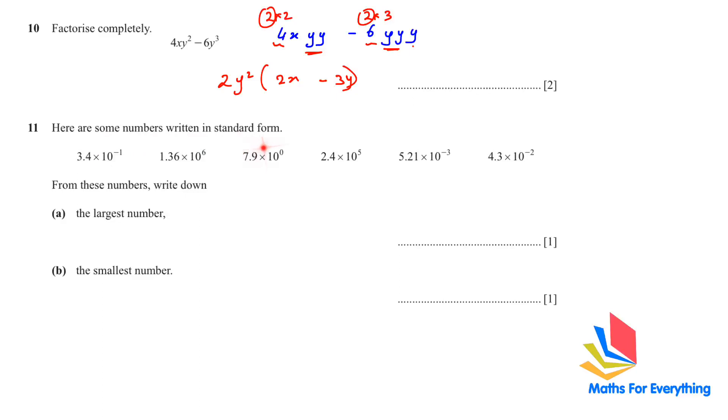Question number 11. Here are some numbers written in standard form. Write the largest number and the smallest number. Use your calculator and write these numbers in ordinary form. For numbers like this, you may not get the answer in a decimal form. So remember, if it's a negative, you move your decimal to the left. So 10 to the power of negative 3. You move your decimal three places to your left, and this is the answer you will get. So which is the largest number? As you can see, this is the largest number. So we write it 1.36 multiplied by 10 to the power of 6. And the smallest number is 5.21 multiplied by 10 to the power of negative 3.